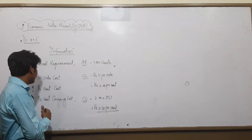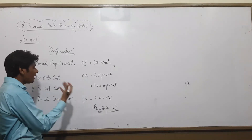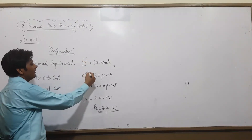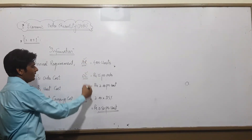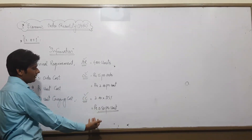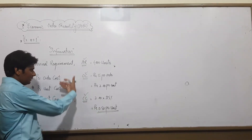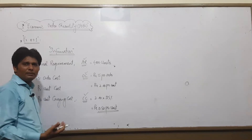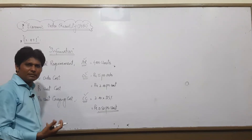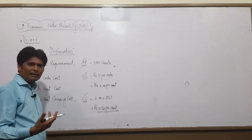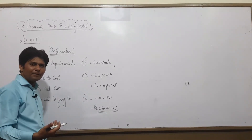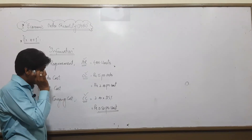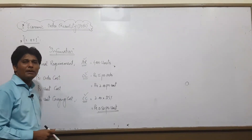These three elements — AR, OC, and CC — are our three variables. We write them in this sequence, top to bottom, because that symmetry and order makes solving the question easier for you.